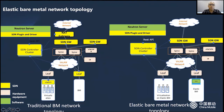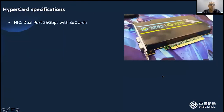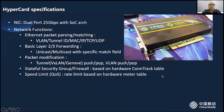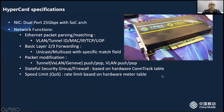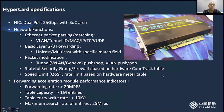The OVS receives OpenFlow rules issued by the northbound SDN controller to implement various complex network functions. This picture shows our HyperCard, including dual-row 25G ports with SOC architecture. Networking functions include basic Ethernet packet parsing and matching, basic layer 2 and 3 forwarding, packet modification such as tunnel push and pop and VLAN push and pop, stateful security groups and firewall based on hardware connection tracking table, and QoS based on hardware meter table. Forwarding acceleration module performance indicators include forwarding rate greater than 20 million pps, table capacity greater than 1 million entries, and so on.